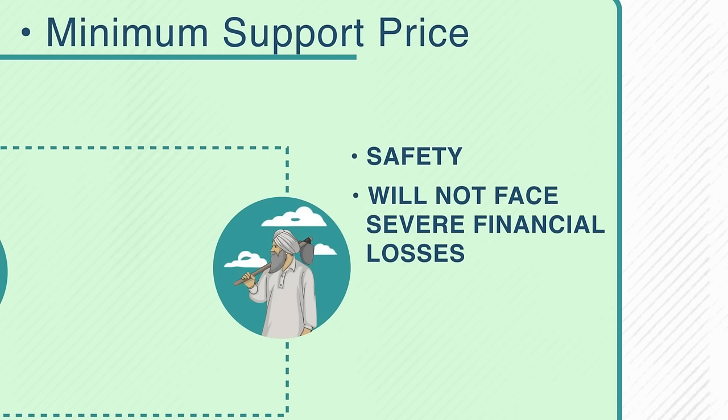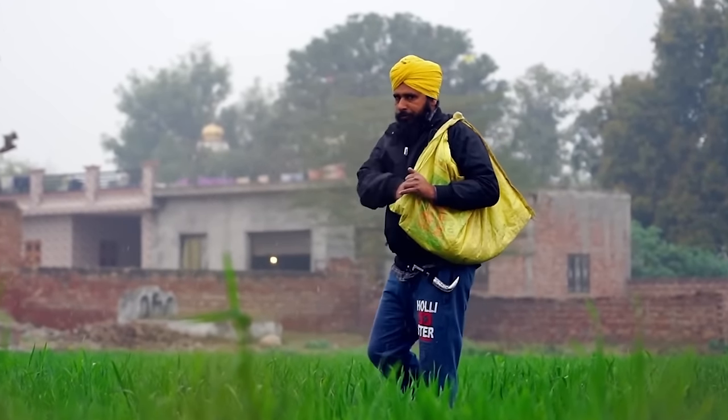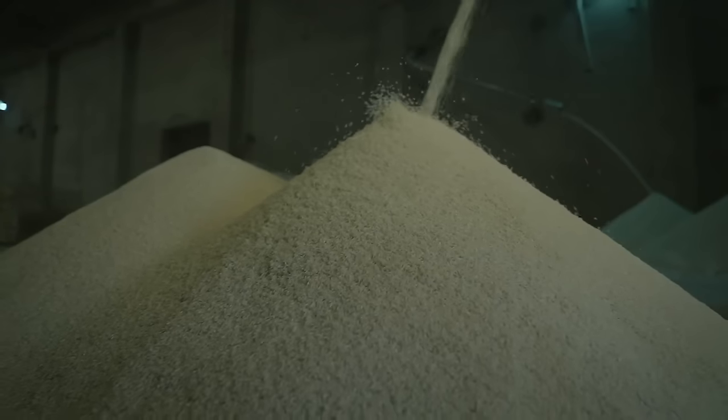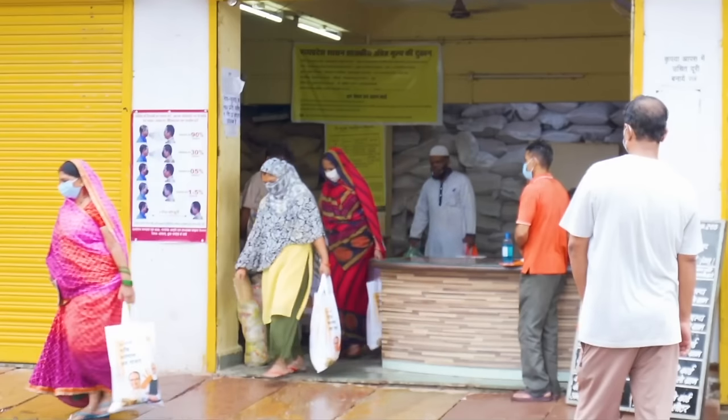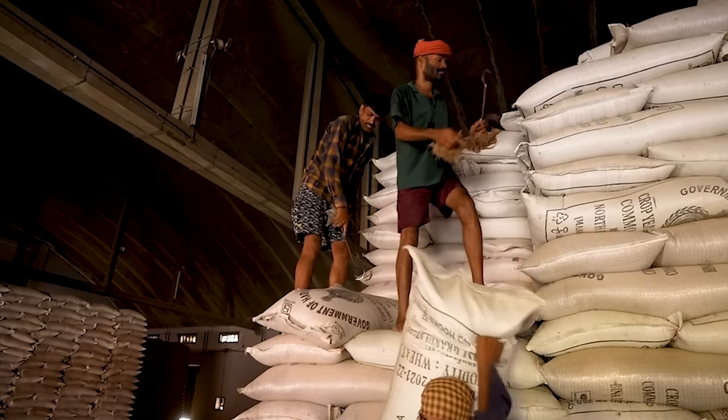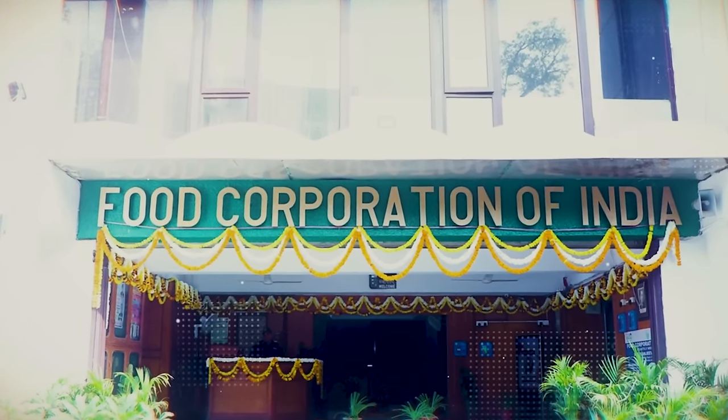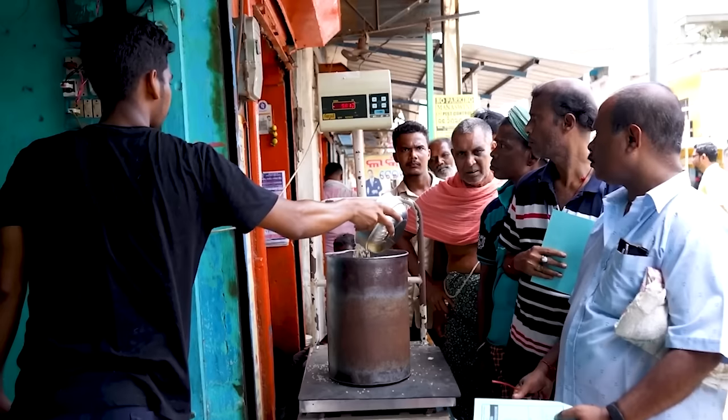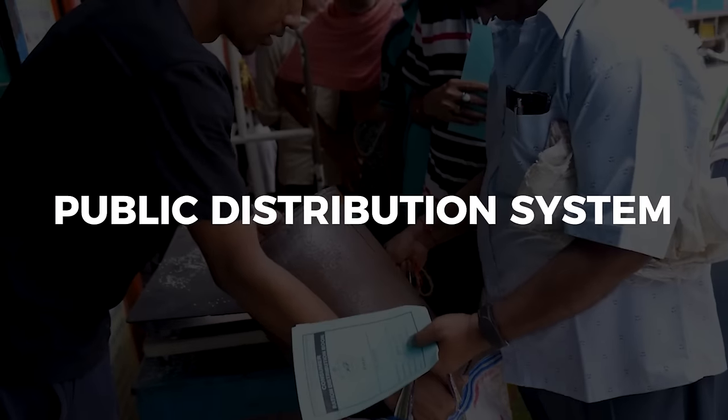So the MSP is supposed to provide farmers with safety — they will not face severe financial losses even when market conditions are unfavorable. On the other hand, if the market price for rice is higher than the MSP, then you as a farmer can easily sell to normal wholesalers. This way the farmers feel safe, their cost price is recovered, and the government becomes the savior. The rice that the government procures can be distributed to the poor or sold to private buyers. In India, the Food Corporation of India procures rice and wheat at MSPs and distributes it through the public distribution system.